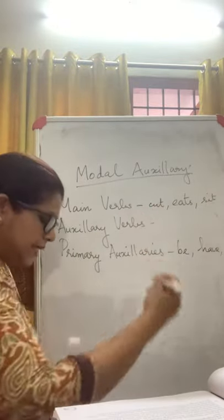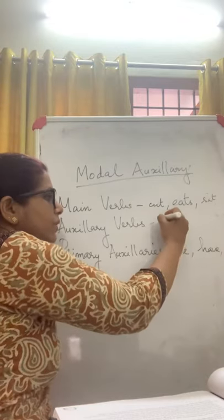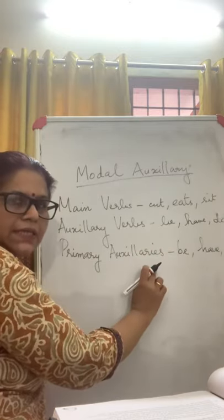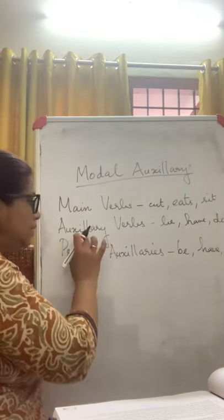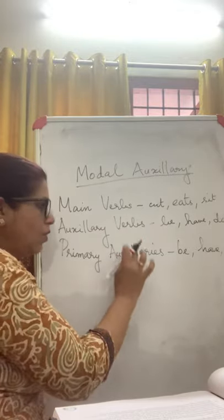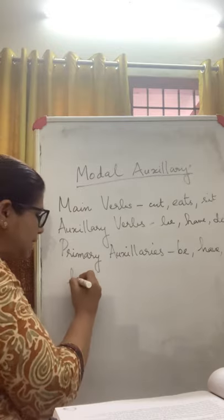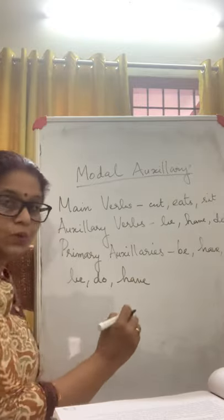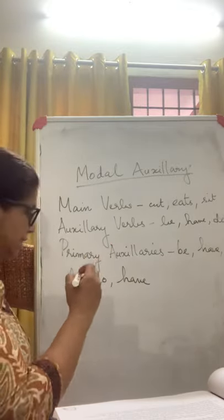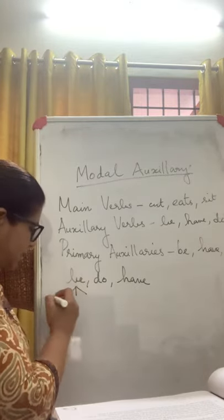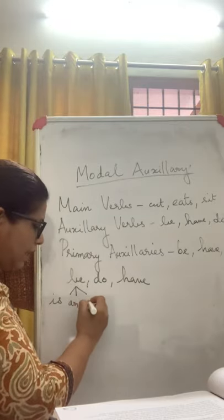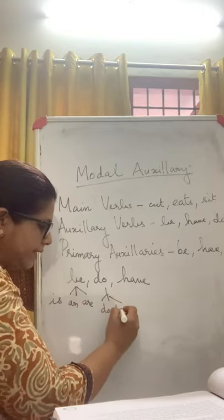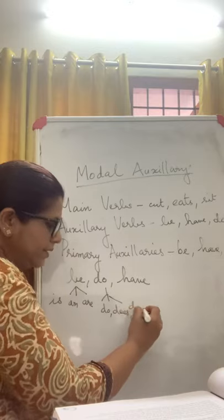Now, what is an auxiliary verb? Auxiliary verbs come from 'be', 'have', and 'do'. They are also termed as the primary auxiliaries. What you have to remember is that these verbs change according to the subject of a sentence. For example, in 'be' you have three: is, am, are. In 'do' you have three: do, does, and did.